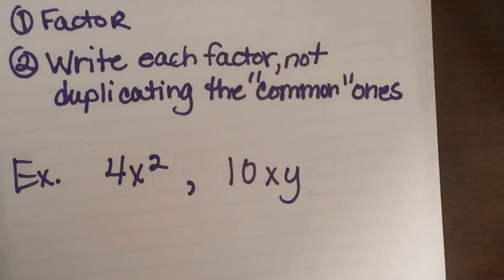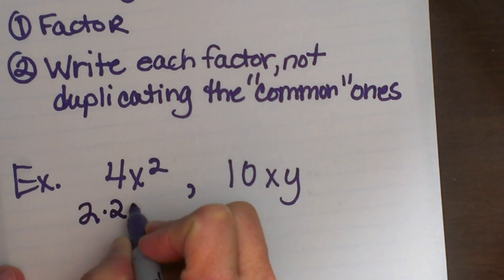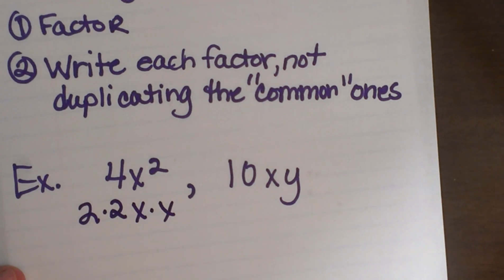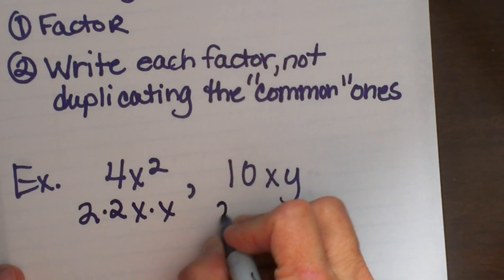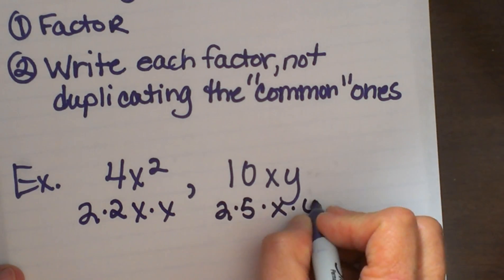We have 4x squared. So if I factor 4x squared I am going to factor the 4 into 2 times 2 and the x squared to x times x. I am going to do the same thing with 10xy. So 10 is going to break down to 2 times 5 and then x times y.